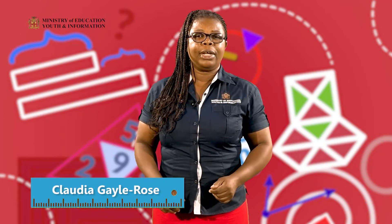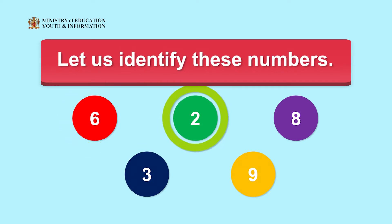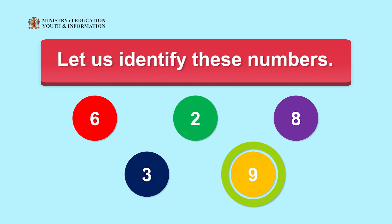Do you remember the numbers from 0 to 10? Let's see how many you know. Look at them and call them. Good job! That's the number 6. Great! That's the number 2. Wow! That's the number 8. Good job! That's the number 3. Well done! That's the number 9. You really can identify numbers. That's okay if you did not get all of them.